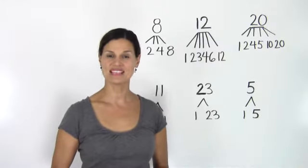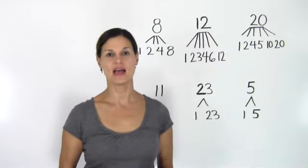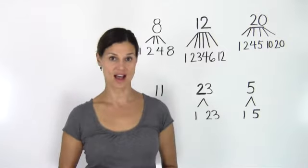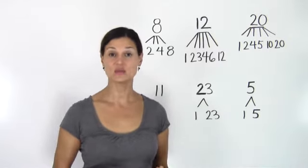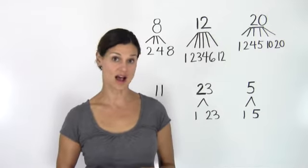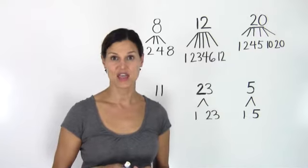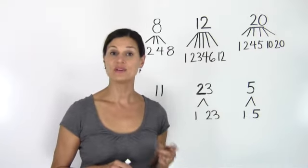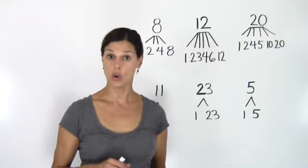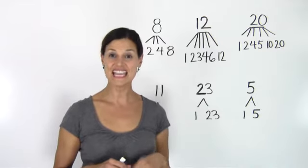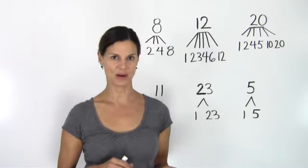Whole numbers can be separated into two categories: prime numbers and composite numbers. The difference between a prime number and a composite number has to do with the number of factors. Now remember that a number's factors are whole numbers that can divide evenly into that number.